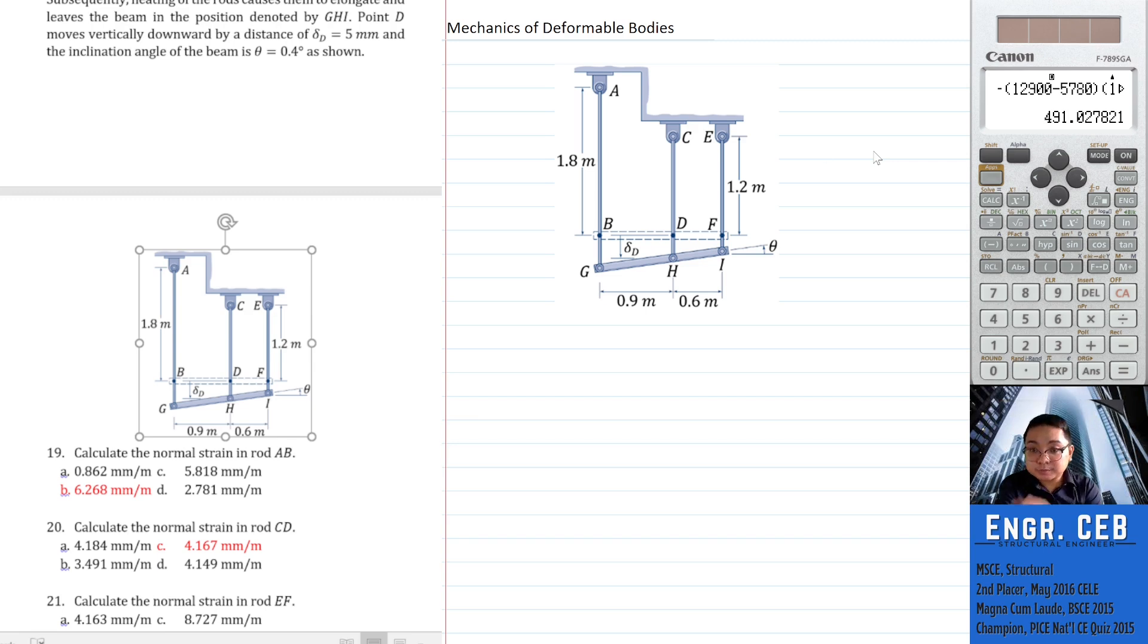Point D moves vertically downward by a distance of 5 millimeters. The inclination angle of the beam is 0.4 degrees. Calculate the normal strain in rod AB. In determining the normal strain, that is simply the deformation over the original length. We just need to determine what the deformation of AB is, then divide by the length. It's that simple.